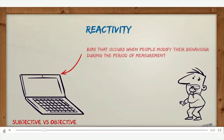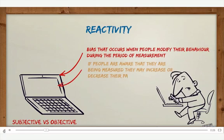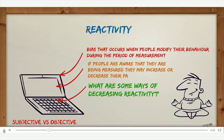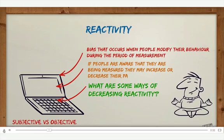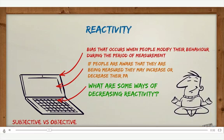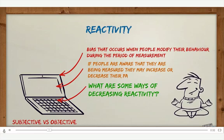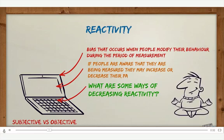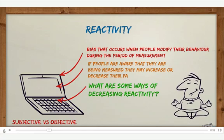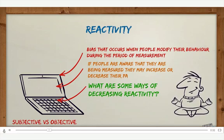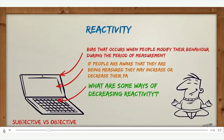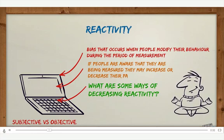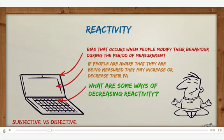Reactivity is a type of bias that occurs when people modify their behaviour during the period of measurement. If people are aware that they're being measured, they might increase their physical activity because they want to impress whoever is recording them, or they could decrease their physical activity if they might be embarrassed. There are ways of decreasing reactivity — see if you can think of some.